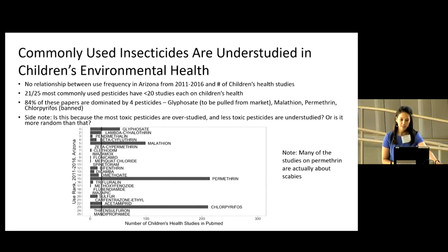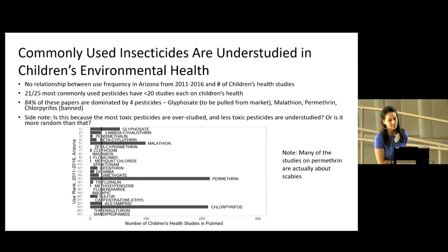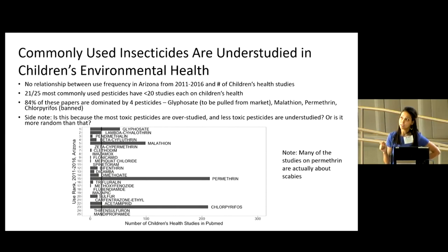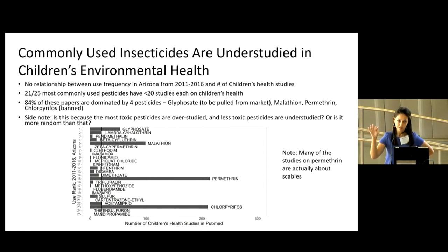Another issue is that the rate of research production on specific pesticides is actually not related at all to the rate of use. This is a chart I generated from my data. On the x-axis is the number of children's health studies in PubMed, and on the y-axis is the use rank for these pesticides from 2011 through 2016. Glyphosate is the most commonly used pesticide in Arizona during this time period, and mandipropamid was the 25th most commonly used. The vast majority of pesticides have between zero and 20 publications. Most children's health studies are concentrated on four ingredients: glyphosate, malathion, permethrin — where most studies are just on efficacy for scabies — and chlorpyrifos, which was just banned.